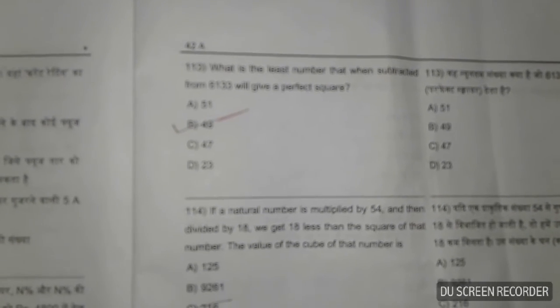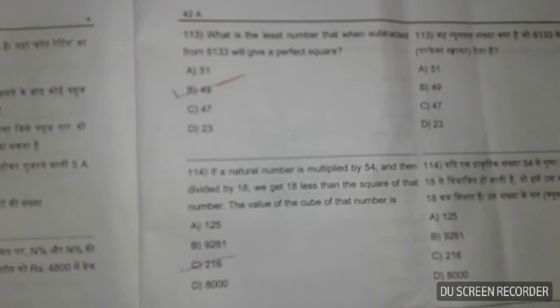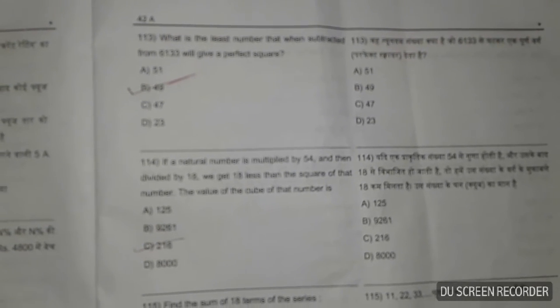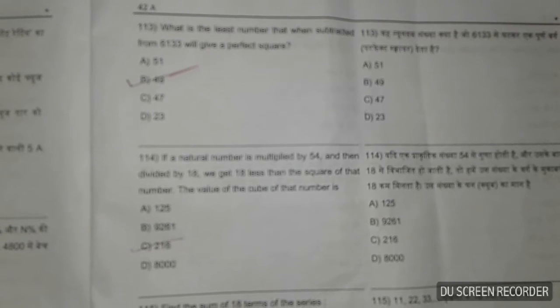The answer is 49. If a natural number is multiplied by 54, then divided by 18, we get 18 less than the square of that number. What is the value of the cube of that number?